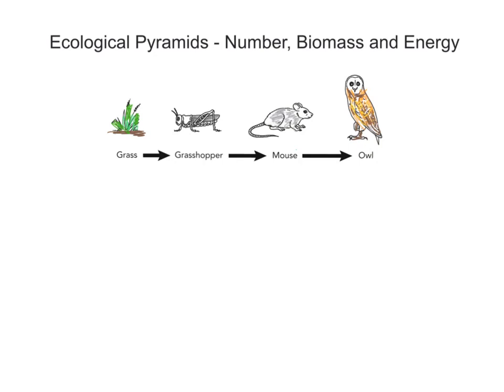You can see we start with the grass on the left-hand side. The grass acts as a producer — it's the photosynthetic organism within this food chain. It photosynthesizes, produces its own sugars, producing its own food ultimately. So the producer starts this food chain. You can see that grass is eaten by the grasshopper, and the grasshopper is what's called the primary consumer.